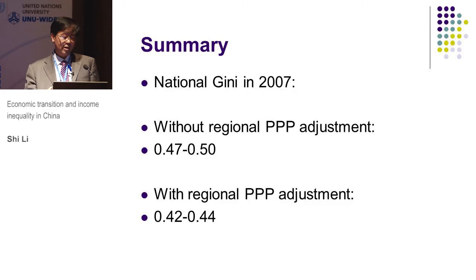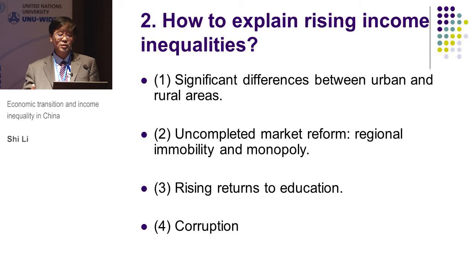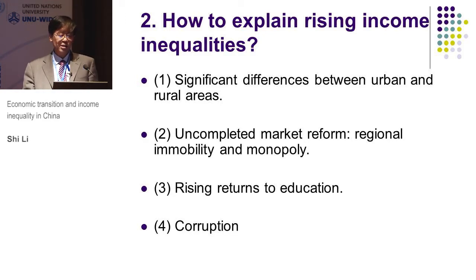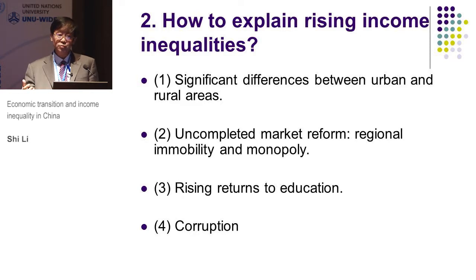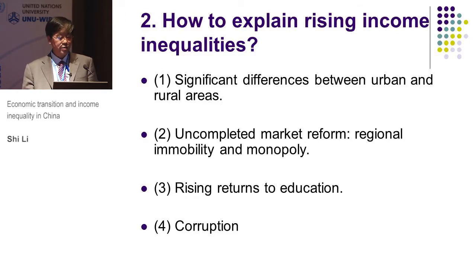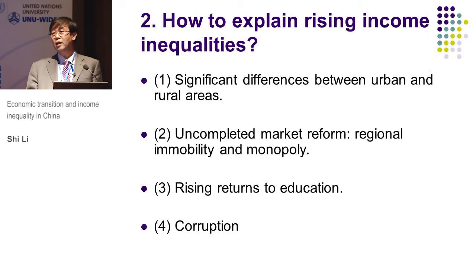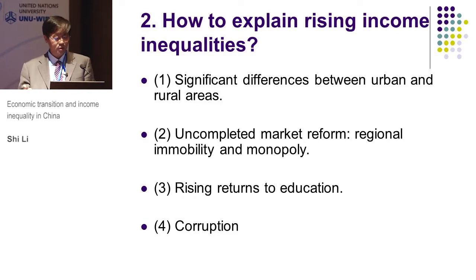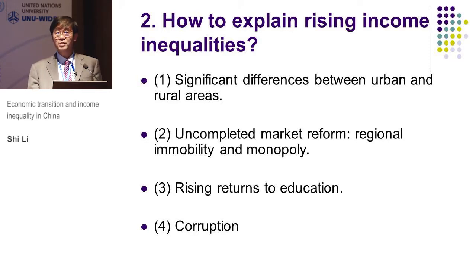My second topic is how to explain the rising income inequality. I will focus on four elements. The first is significant income differences between urban and rural areas. The second is regional disparities and monopoly in economic sectors. The third is rising returns to education, meaning the income gap between educated and non-educated workers has been increasing. The last one is corruption, which is related to the rising income inequality and income equity issues.